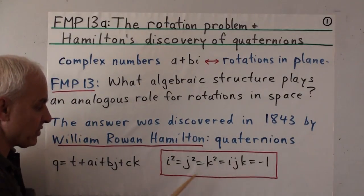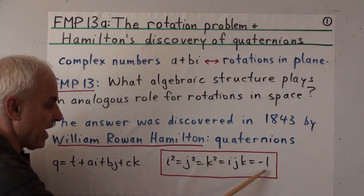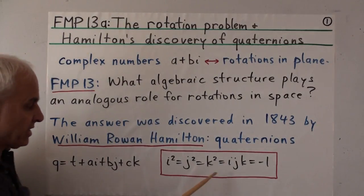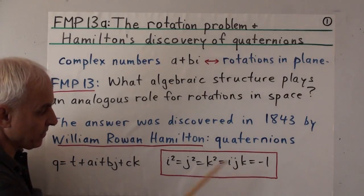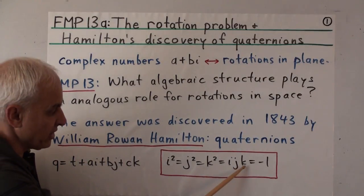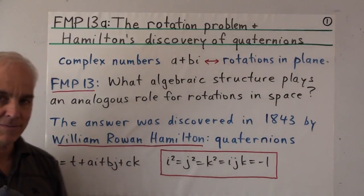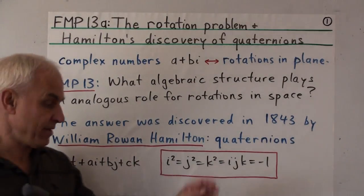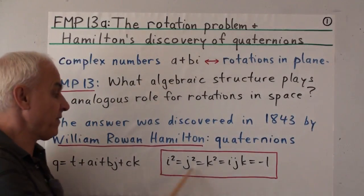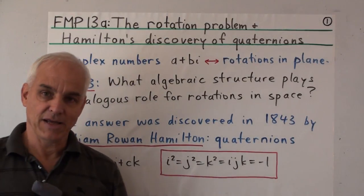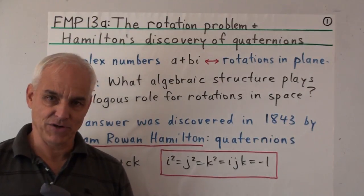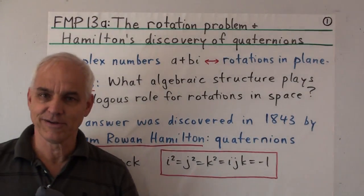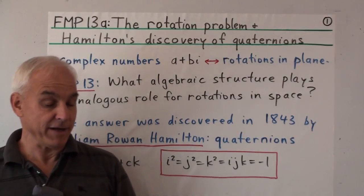The key equations were: i squared equals minus one, j squared equals minus one, k squared equals minus one — much like the complex number situation — and additionally, i times j times k equals minus one. Hamilton realized this in a flash of insight, and in a small piece of mathematical vandalism carved this equation into the stonework of the bridge. That's a famous mathematical anecdote, a bit of high drama in the world of pure mathematics.